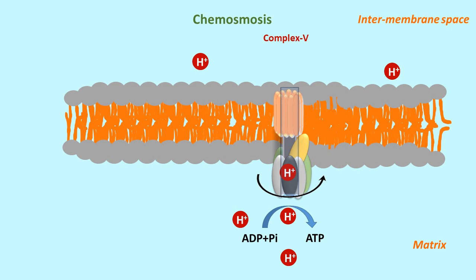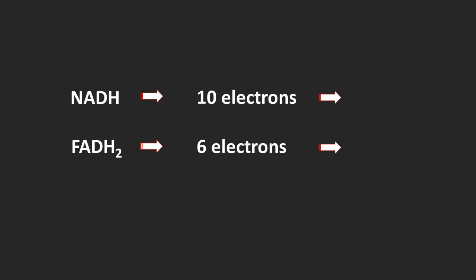One ATP molecule is synthesized by inflow of 4 protons into matrix. So, statistically, 2.5 ATP molecules are synthesized by 1 reduced NADH whereas 1.5 ATPs are synthesized by 1 reduced FADH2.